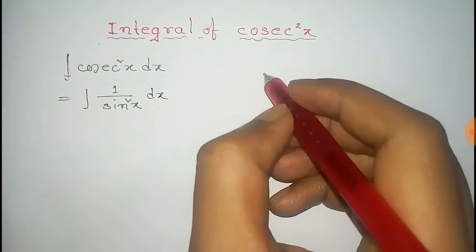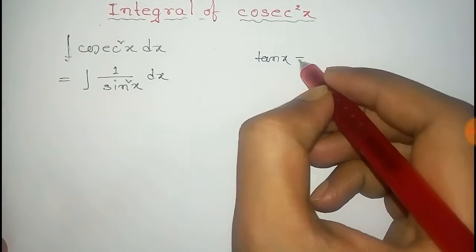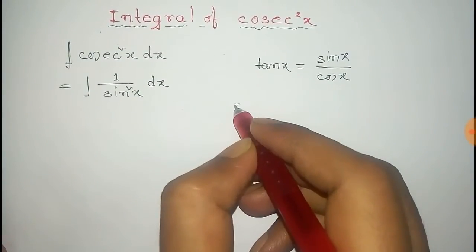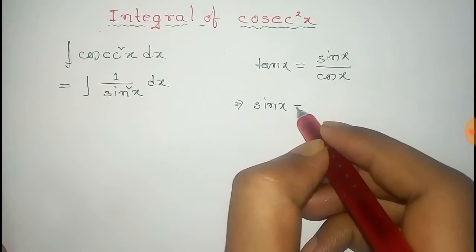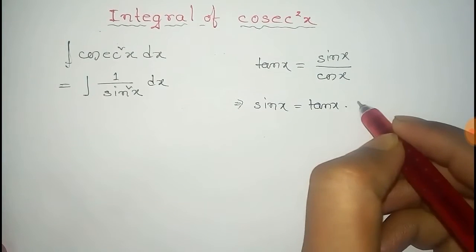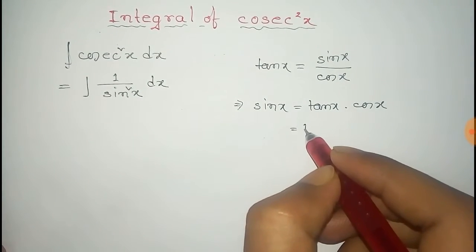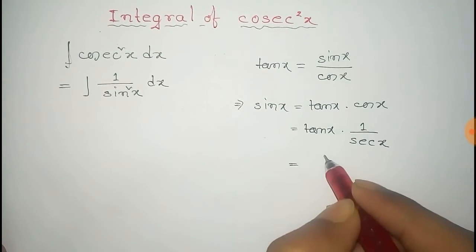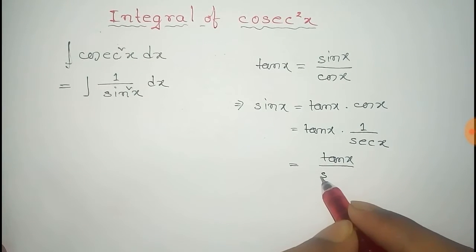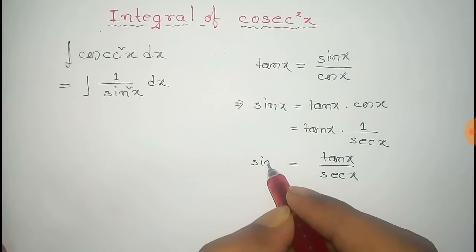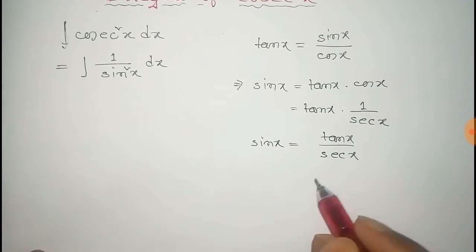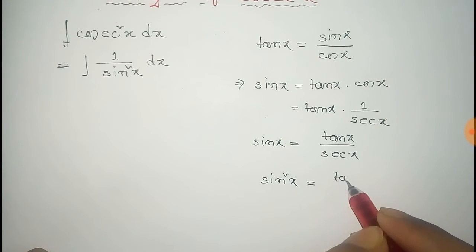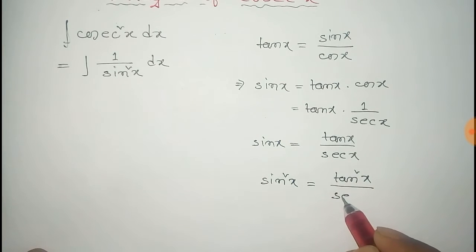Now we know that tan x equals sin x by cos x. From this, sin x equals tan x into cos x, and cos x can be written as 1 by sec x, so that is equal to tan x by sec x. From this, sin squared x is equal to tan squared x by sec squared x, taking square on both sides.